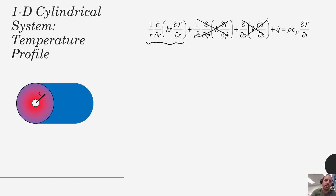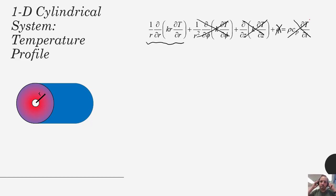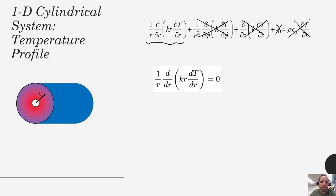Phi is the angle and Z is axially down the length of the cylinder. We are also talking explicitly about systems that have no generation and that are at steady state, so they have no accumulation term. Since temperature is only varying as a function of one variable — the radius — we can reduce the heat equation down to this simple one-dimensional form.